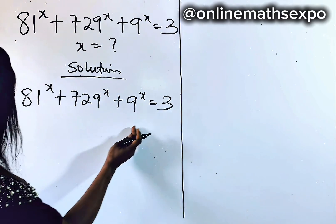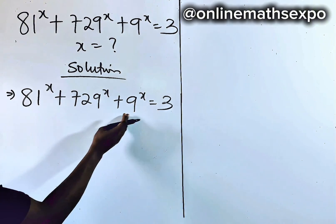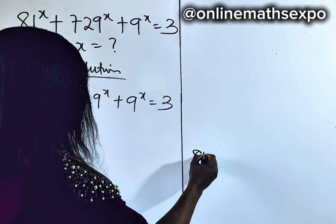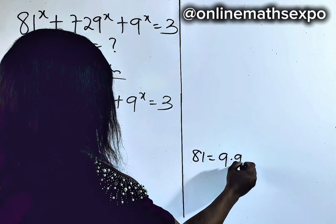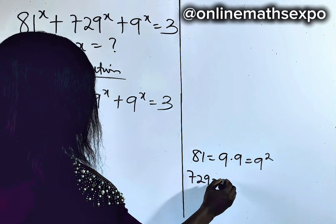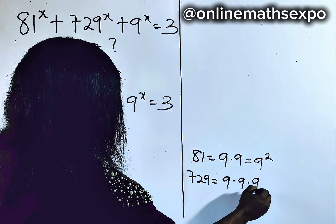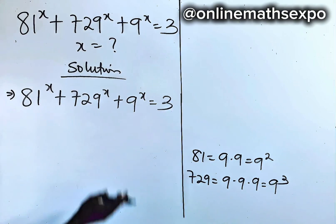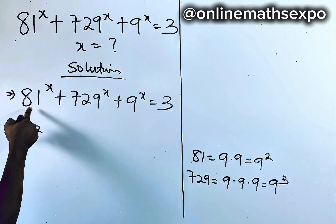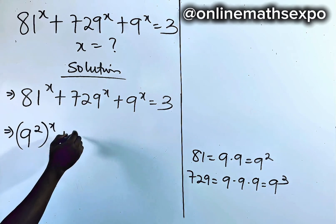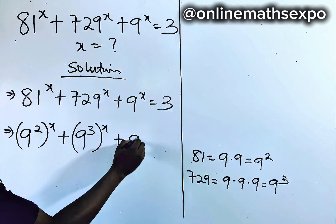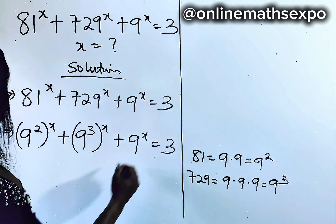Looking at the left side, you observe that these numbers can be expressed as powers of 9. We know that 81 is 9 times 9, which is 9 squared. 729 is 9 times 9 times 9, which is 9 cubed. So applying it here, we have 9 squared raised to power x, plus 9 cubed raised to power x, plus 9 to the power of x, equal to 3.